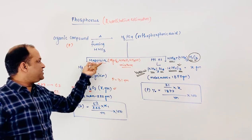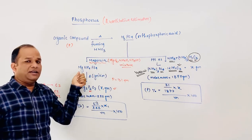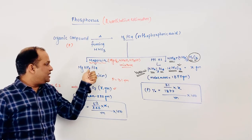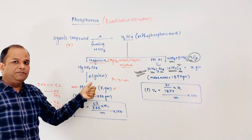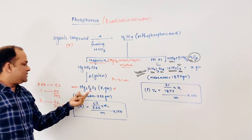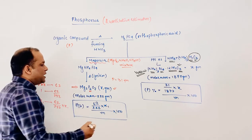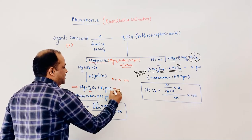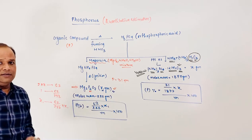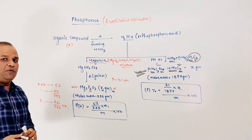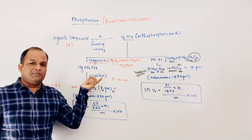In the first method, we treat H3PO4 with magnesia. It is converted into MgNH4PO4, and when this compound is ignited or heated, it is converted into Mg2P2O7. We will get the mass of this compound — suppose the mass obtained is X1.